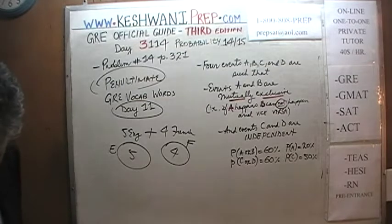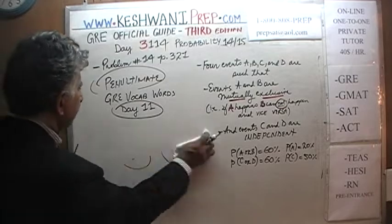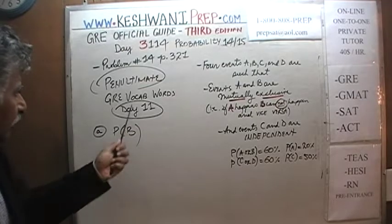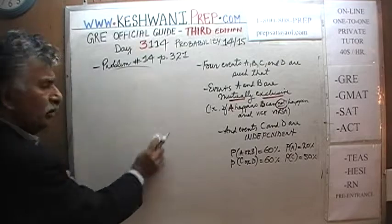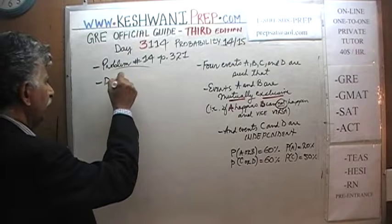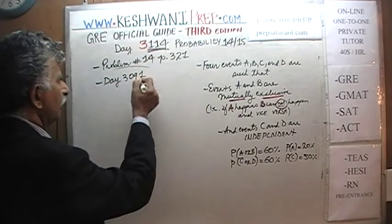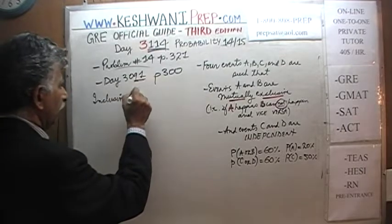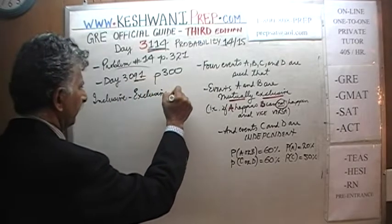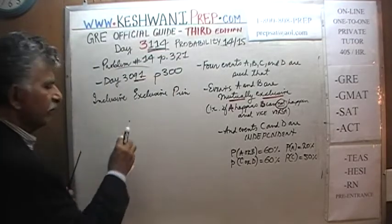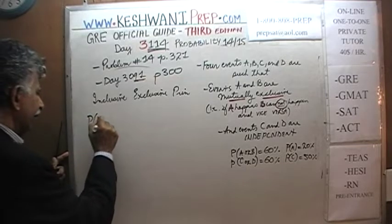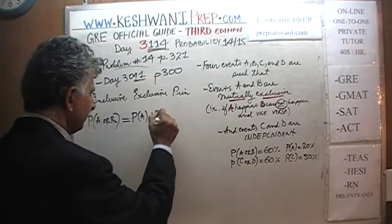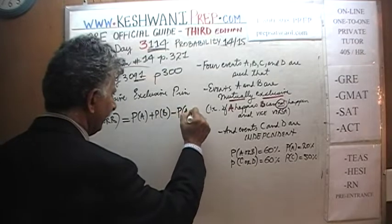Let's do the problem. The first question asks: what is the probability of event B? To answer this we use what we learned on day 91, page 300 — something called the inclusive-exclusive principle, which states: the probability of A or B happening equals the probability of A plus the probability of B minus the probability of A and B happening.